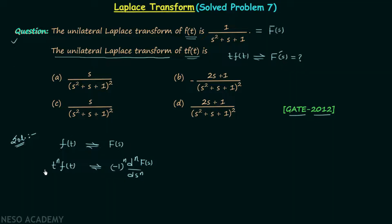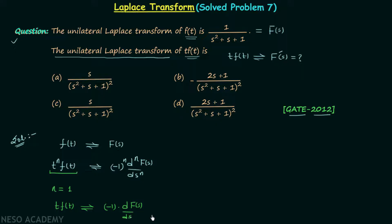Comparing t^n·f(t) with t·f(t), we find n is equal to 1. So for the signal t·f(t), the Laplace transform will be (−1)^1 times the first derivative of F(s), which equals minus dF(s)/ds.